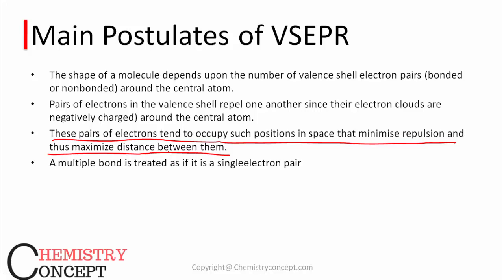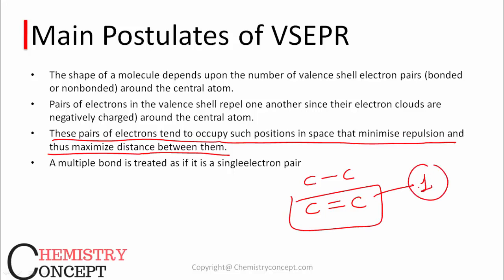The next postulate is that pairs of electrons tend to occupy positions in space that minimize repulsion and thus maximize the distance between them. One more postulate: if there are double bonds, these double bonds are regarded as a single bond in VSEPR theory. A multiple bond is treated as a single electron pair, not as two different electron pairs.